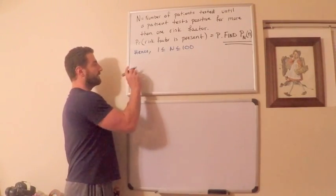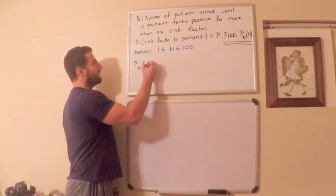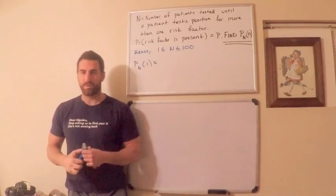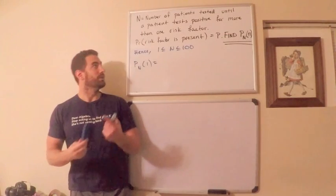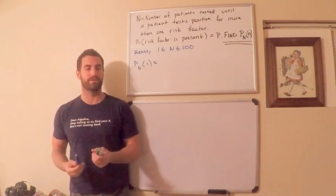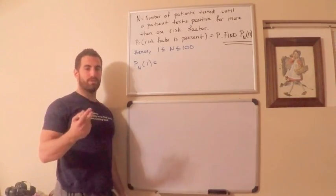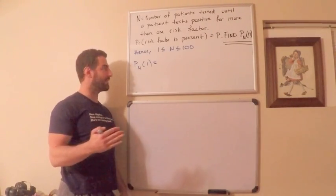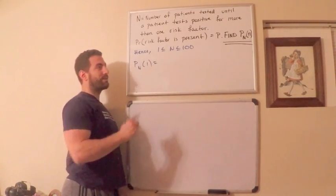The first thing I'll look at is P_N of 1. What is this actually asking? This is saying: what's the probability that the very first patient I test has more than one risk factor? In other words, they have two or three, because there are three risk factors total. The probability of a risk factor is p, so let's say they have two risk factors — that means p times p for two of them, and then one minus p for the third.